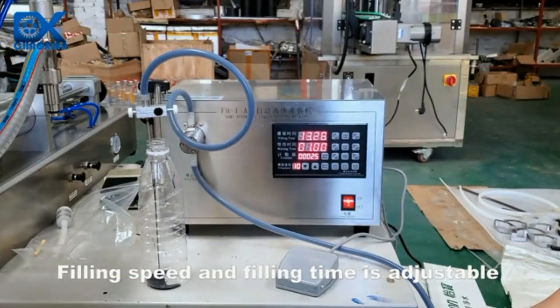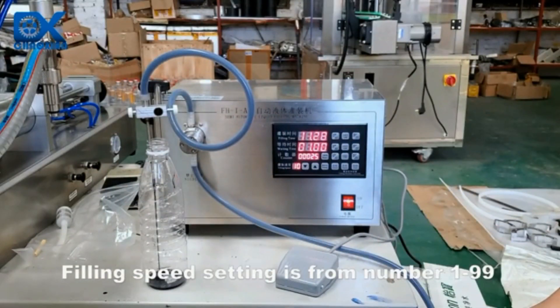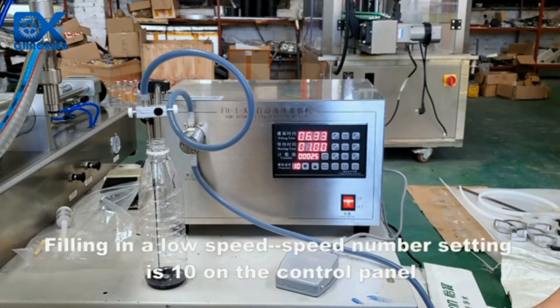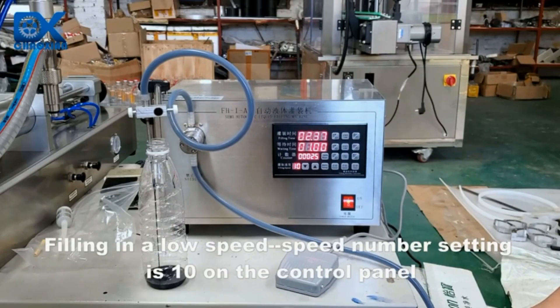Filling speed and filling time is adjustable. Filling speed setting is numbered from 1 to 99. Filling in a low speed, speed number setting is 10 on the control panel.